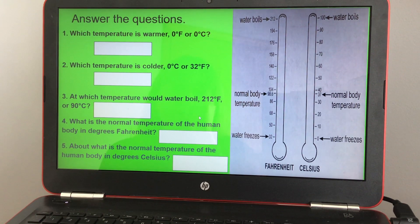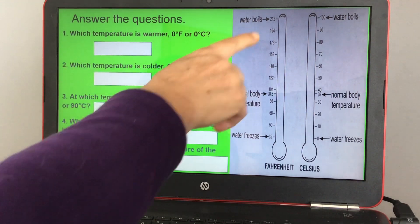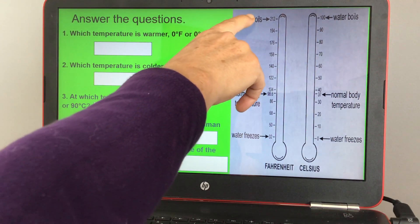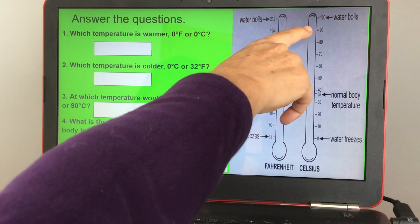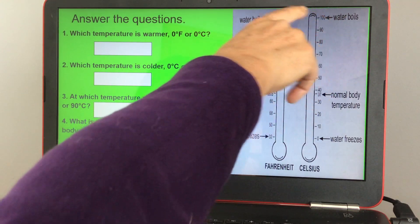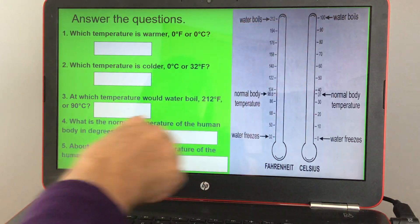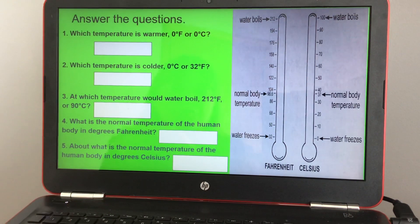Number three, at which temperature would water boil, 212 degrees Fahrenheit or 90 degrees Celsius? So water boils at 212 degrees Fahrenheit. If you went to 90, it's below where water boils, so it'd be 212 degrees Fahrenheit.